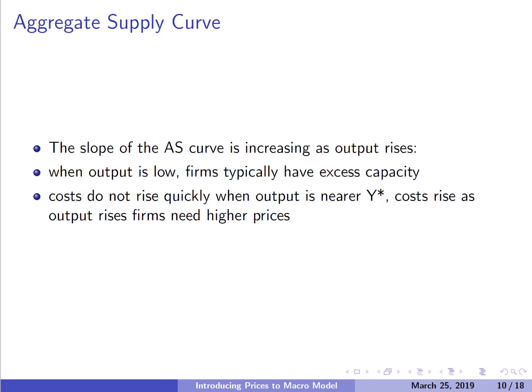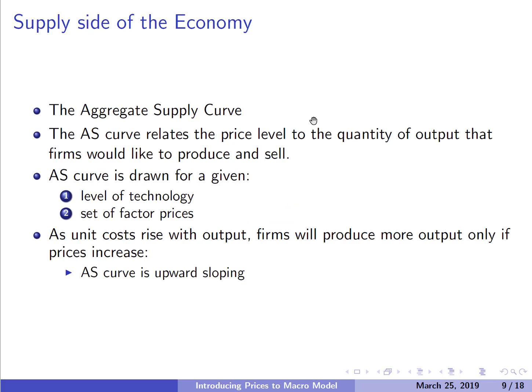When output is low, firms typically have excess capacity — they can produce more without per-unit costs going up. But when we get around our potential output Y*, if we want to start producing more, firms have to raise prices. So at low levels of production the AS curve is relatively flat, but as production increases it gets more and more expensive to produce, and the AS curve gets steeper and steeper. Let's now look at what happens when there are changes to technology or factor prices — an aggregate supply shock.